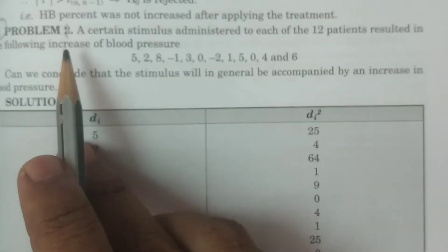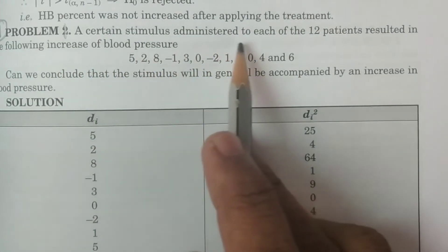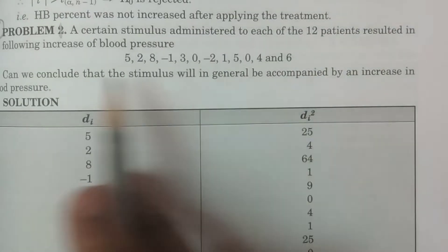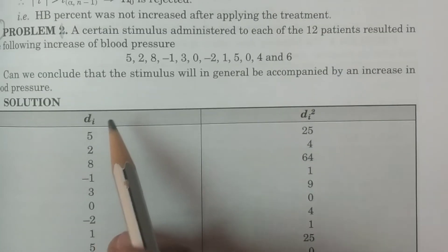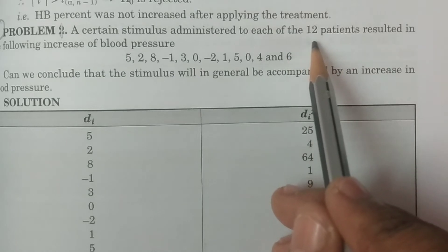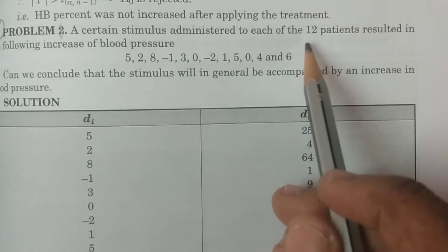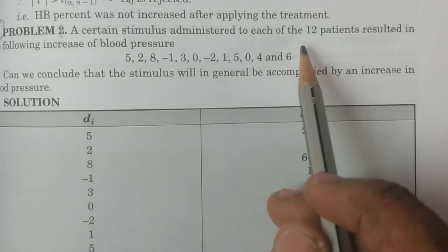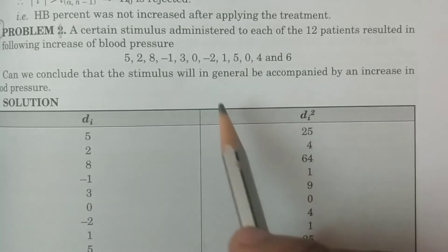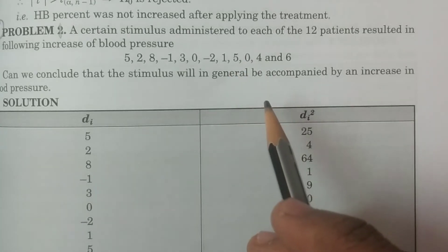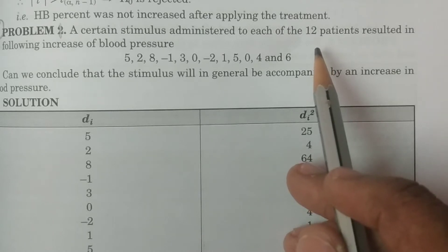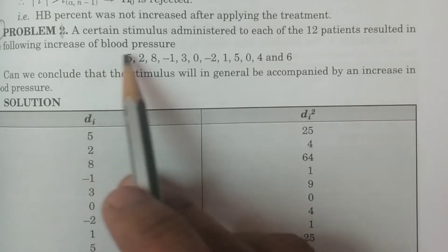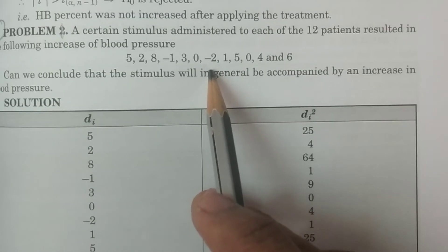In problem number one, a certain stimulus was administered to each of 12 patients, resulting in the following increase of blood pressure. So n is equal to 12. A certain stimulus was administered to the 12 patients, and before and after giving the treatment, this is the increase of the blood pressure observed.